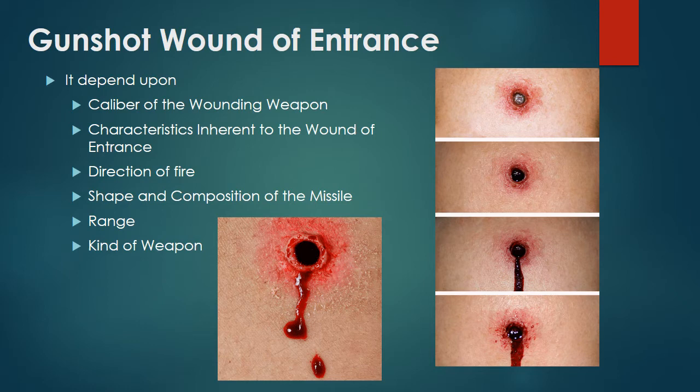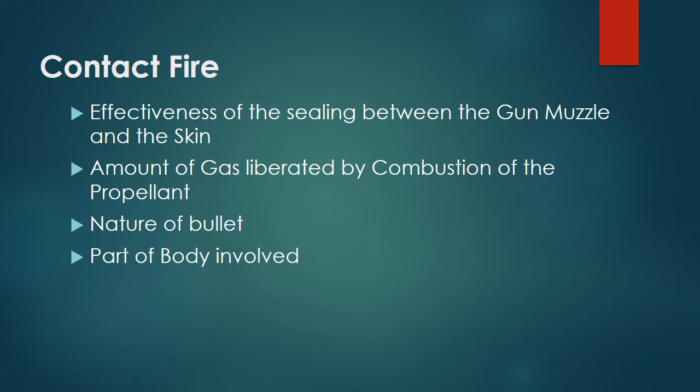As seen in the illustration, the gunshot wound of entrance depends upon the following: caliber of the wounding weapon, characteristics inherent to the wound of entrance, direction of fire, shape and composition of the missile, range, and kind of weapon. In contact fire, factors include the effectiveness of the seal between the gun muzzle and the skin.